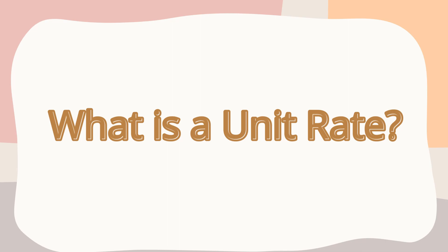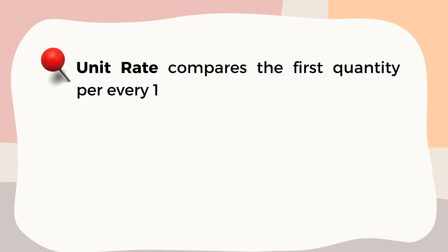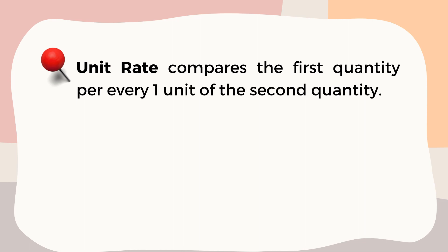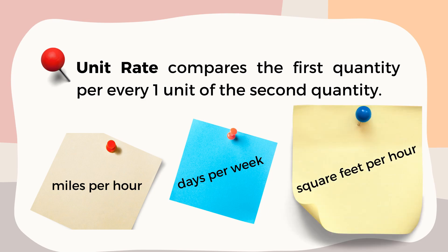Next is a unit rate. What is a unit rate? Unit rate compares the first quantity per every one unit of the second quantity. For example, miles per hour, days per week, and square feet per hour. So now we already know what a ratio, rate, and unit rate are.